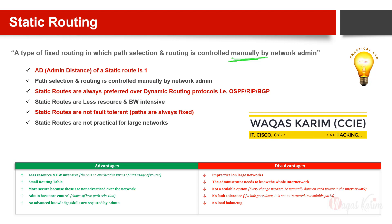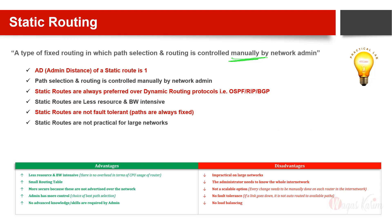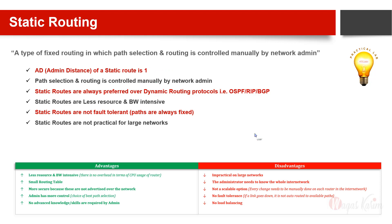Some important characteristics of static routing: the admin distance of static routes is always one, although it can be changed — which is called floating static routes. The path selection and routing is controlled manually by the network admin. Static routes are always preferred over dynamic routes because they have the lowest admin distance of one, compared to OSPF which has an admin distance of 110, RIP which has 120, and BGP which has 220 for internal and external BGP.